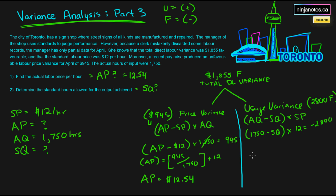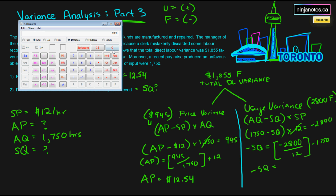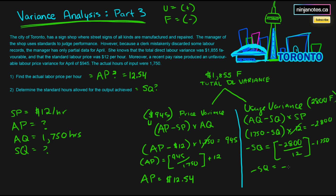Now solving for standard quantity: actual quantity 1750 hours minus standard quantity, times $12, equals negative $2800 (favorable). Rearranging: negative $2800 divided by $12, minus 1750, gives us negative standard quantity equals approximately negative 1983. Dividing by negative one gives us a positive standard quantity of 1983 hours. That's our standard quantity.